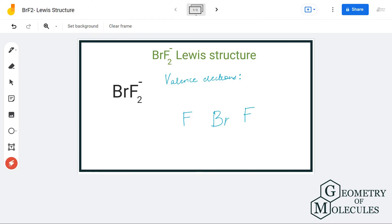Hi guys, welcome back to our channel. In today's video we are going to help you with BRF2 minus Lewis structure. This molecule is an ion because it accepts an additional electron. The minus one charge indicates that it is accepting an additional electron to form the structure.